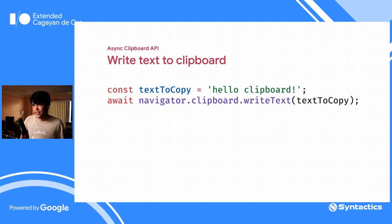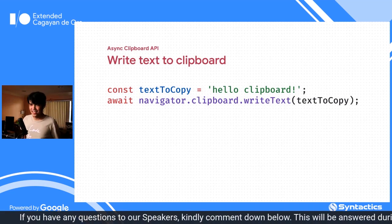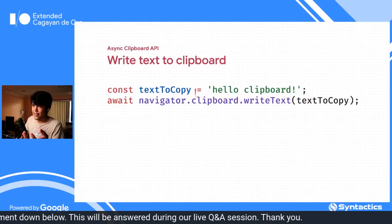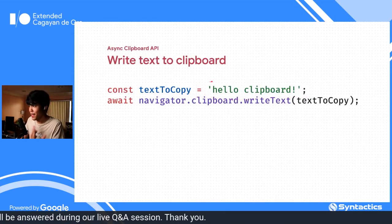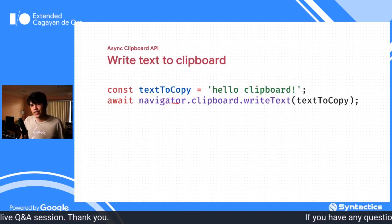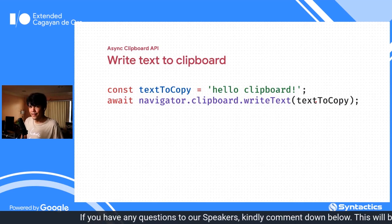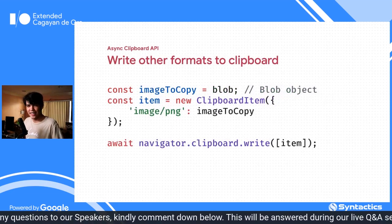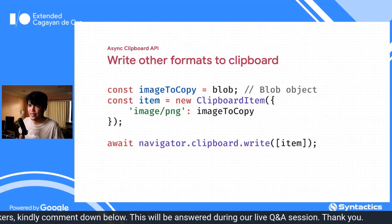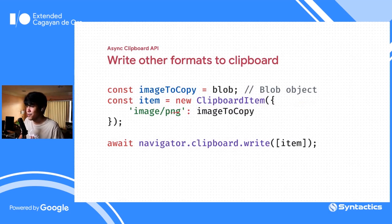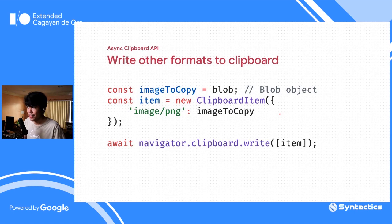Writing text to the clipboard is easy: define the string you want to copy and call navigator.clipboard.writeText() with that text. It also supports other formats — you can copy images and HTML into the clipboard. Currently only PNG images are supported, but more will be added. There's also now support for copying HTML (text/html MIME type) into the clipboard.